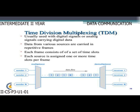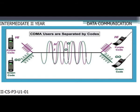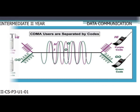Code division multiplexing (CDM), or spread spectrum, is a class of techniques where several channels simultaneously share the same frequency spectrum, and the spectral bandwidth is much higher than the bit rate or symbol rate. CDM techniques are used as a channel access scheme — namely CDMA (code division multiple access) — for example in mobile phone service and wireless networks, with the advantage of spreading inter-cell interference among many users.